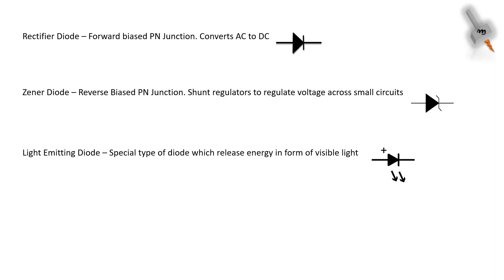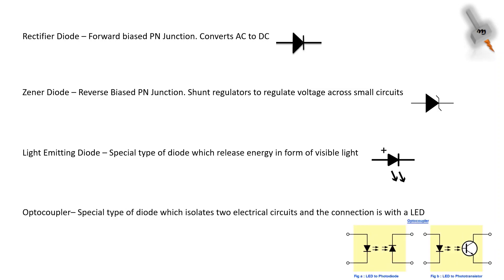The third type is the light emitting diode, which is a special diode that releases electrons in the form of visible light. The last type is the optocoupler, which isolates two electrical circuits by placing a light emitter like an LED and a light sensor to transfer energy in a low voltage circuit, thus providing electrical isolation.